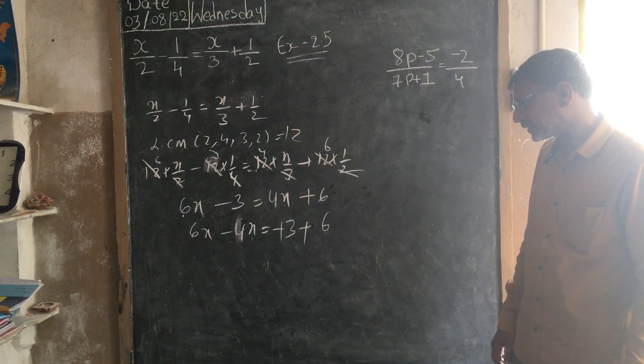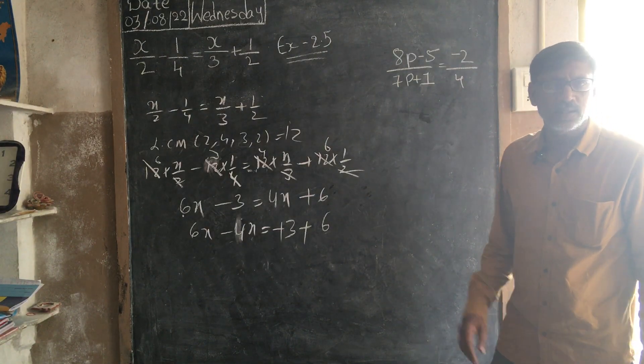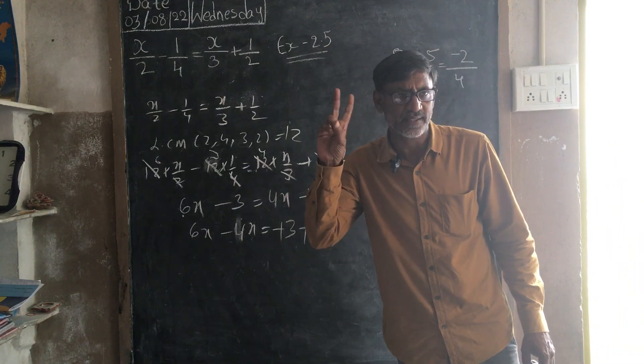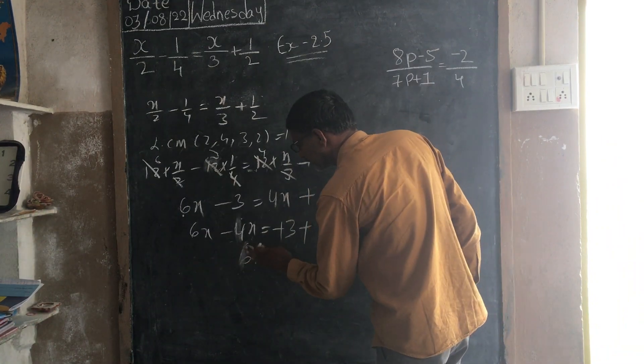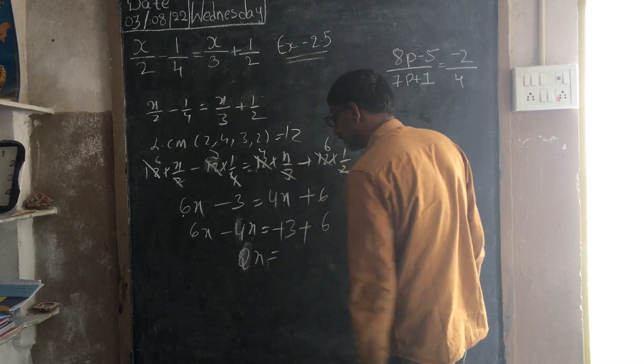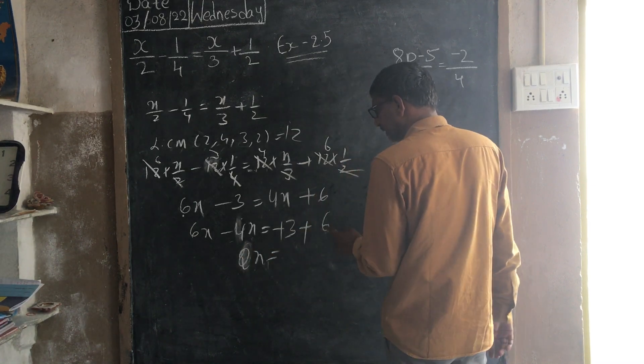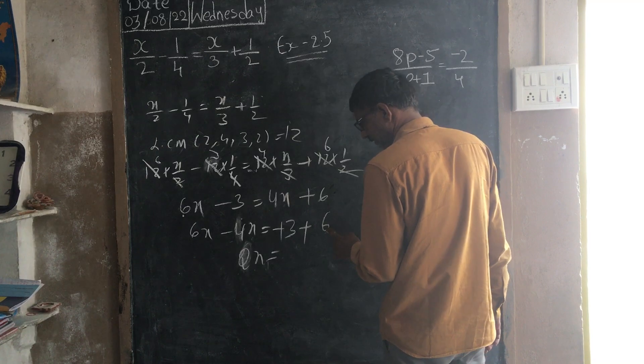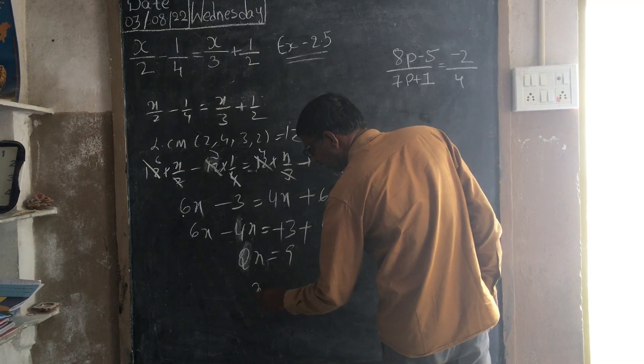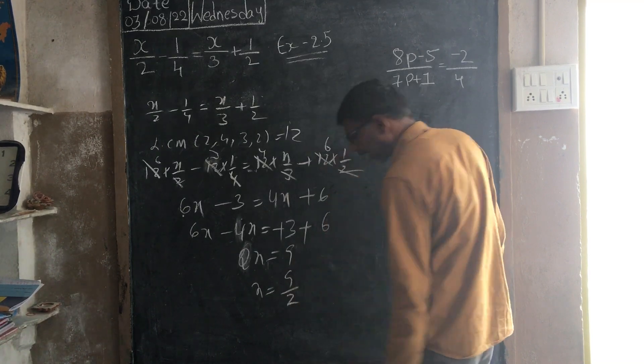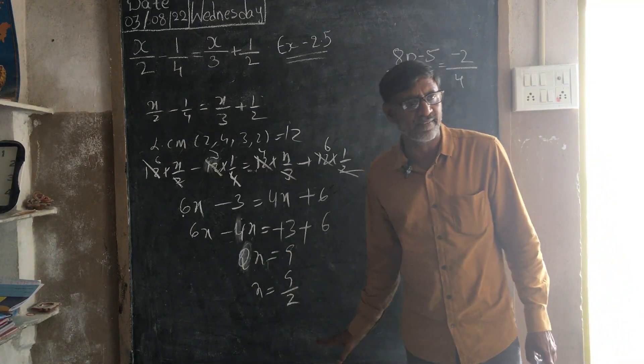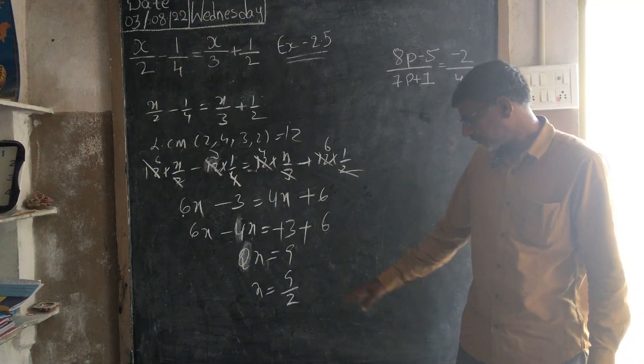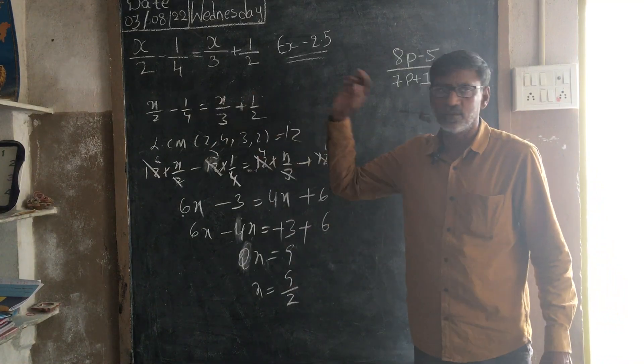Okay, 6x minus 4x, tell me, 2x, right? 2x is equals to, 3 plus 6, tell me, 9. Then x is equals to 9 by 2, because 2 is multiplying, we will go this side and divides 9. 9 by 2 is the solution.